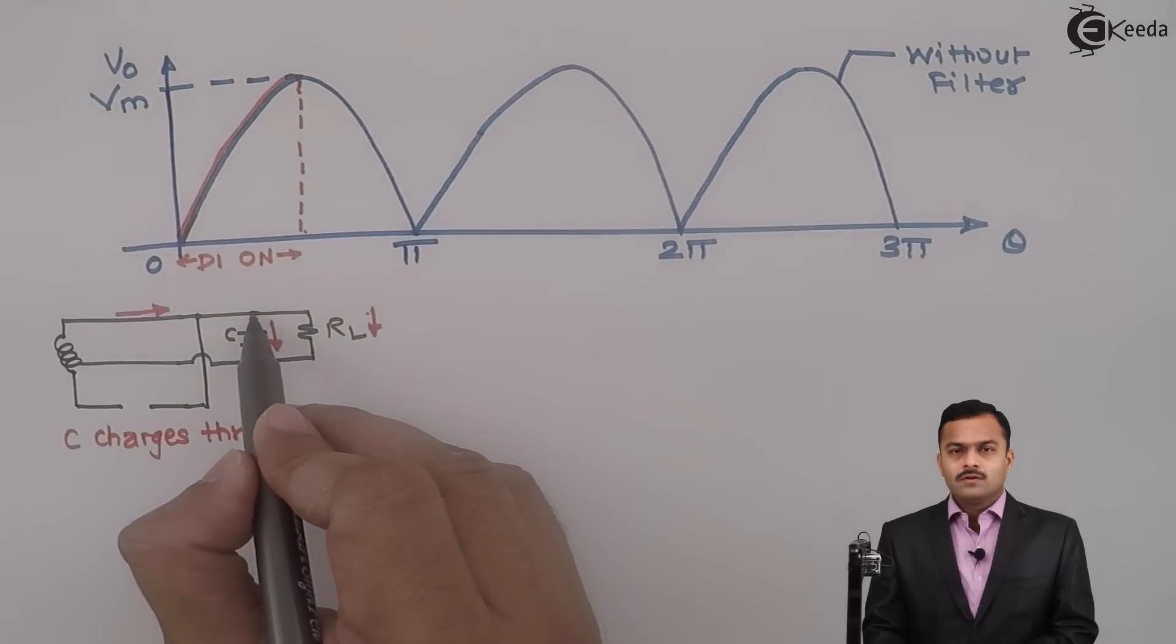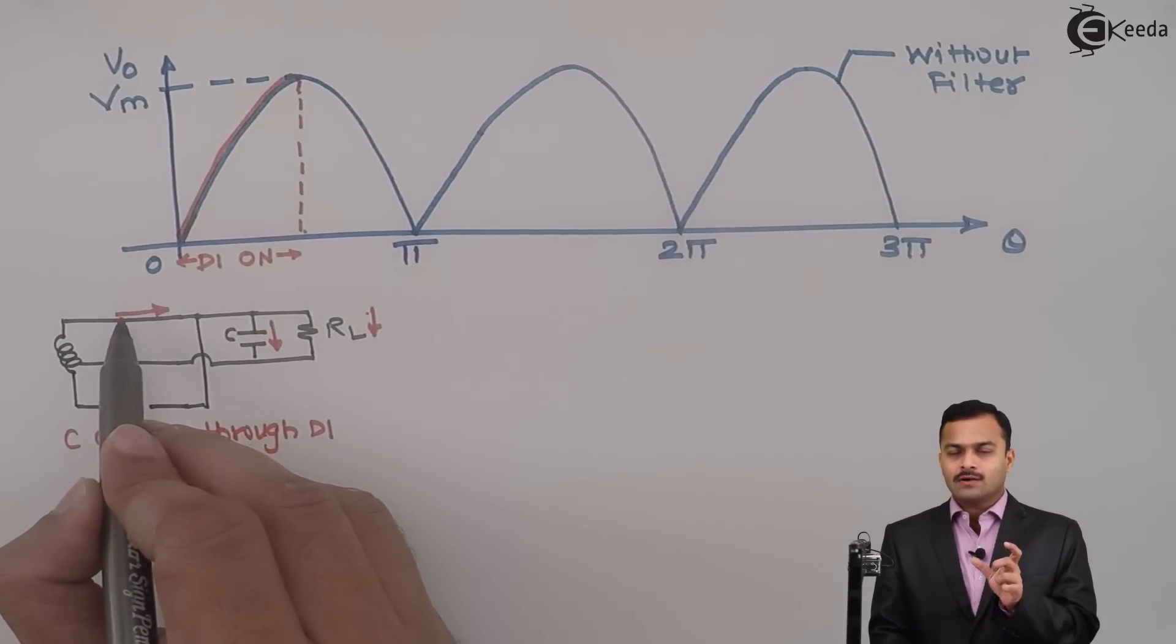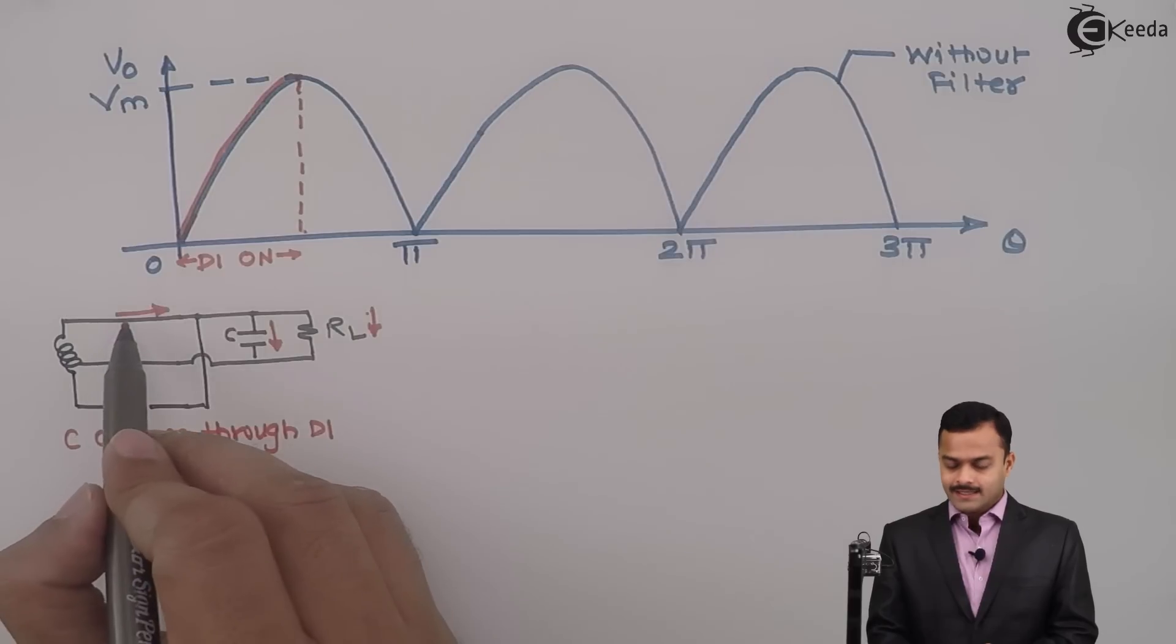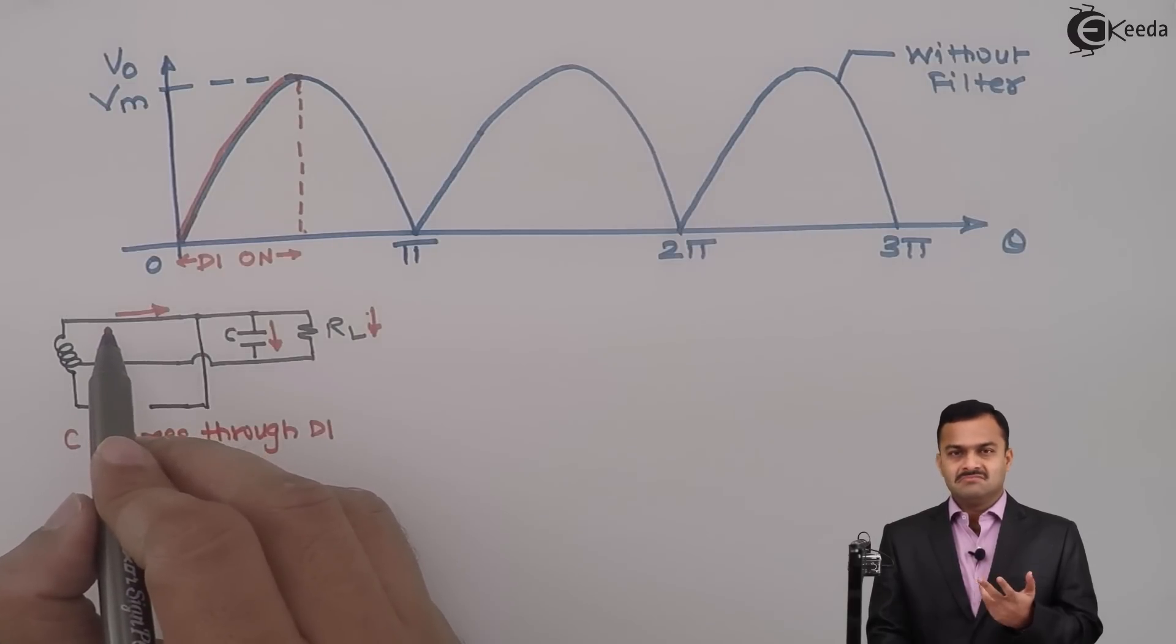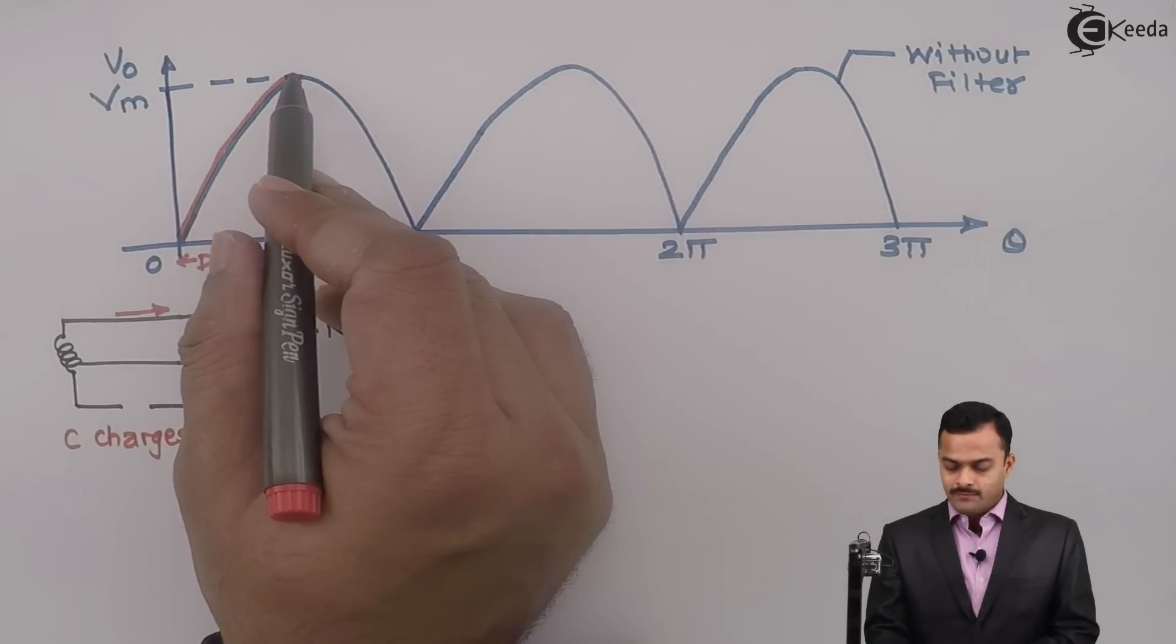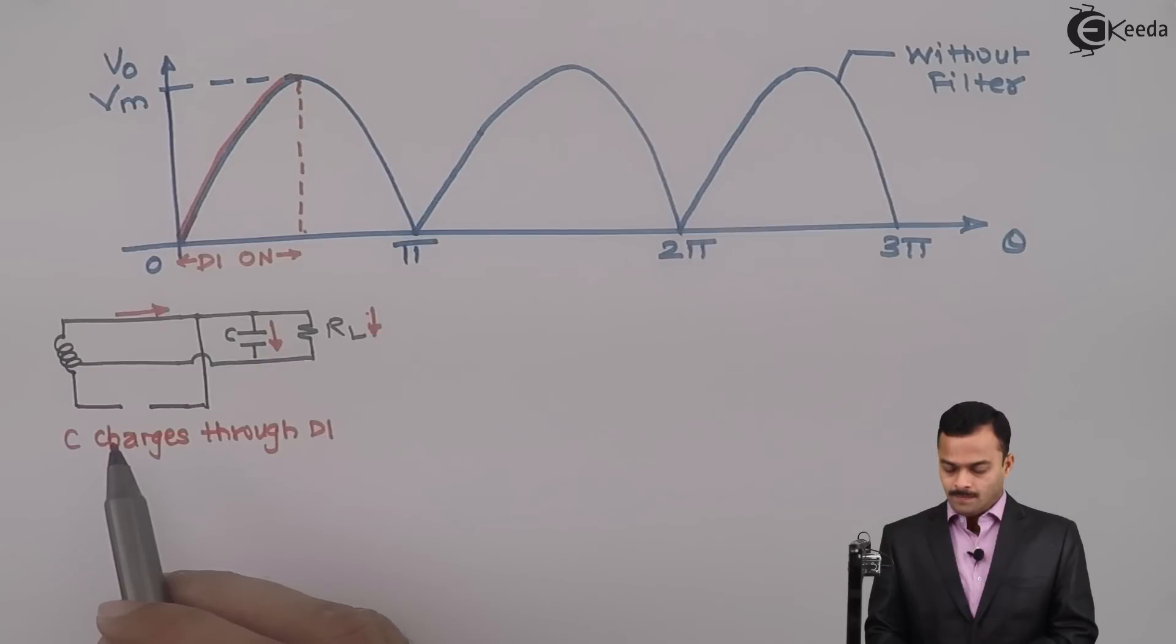What will happen now? Here you will have maximum voltage and here voltage will keep on decreasing. So the potential difference between anode and cathode becomes negative. Negative voltage across diode means diode will not conduct. After the maximum voltage once capacitor reaches, diode D1 will also be reverse biased along with diode D2. After this, both diode D1 and D2 are reverse biased.